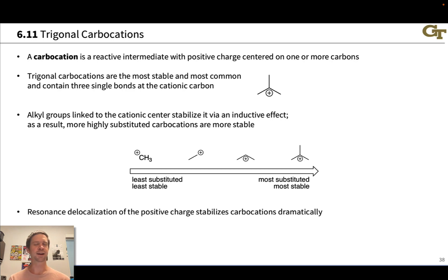Let's start by defining what we mean by a carbocation. A carbocation is a reactive intermediate with positive charge centered on carbon. A trigonal carbocation in particular is the most common type of carbocation. These have three single bonds and no other bonds linked to the cationic center.